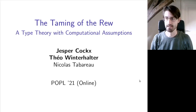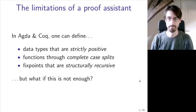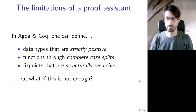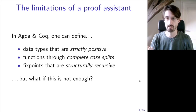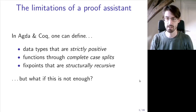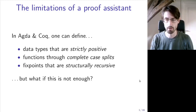But first, let me start by introducing the motivation for why we want to have rewrite rules in a Proof Assistant in the first place. In a Proof Assistant such as Agda or Coq, we typically get access to a few very general mechanisms that allow us to define types as well as functions over these types. For example, we can define inductive data types, as long as they satisfy a certain strict positivity condition. We can define functions over these data types by doing complete case splits that cover all the cases. And finally, we can also define recursive functions as fixed points, as long as they satisfy a certain termination criterion, such as structural recursion. These mechanisms are very general and powerful, and they allow us to do a lot of things.